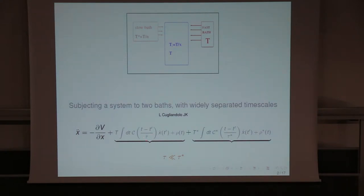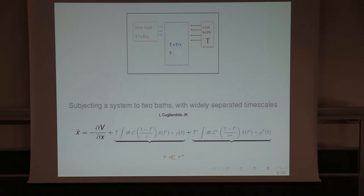One bath has a timescale that is fast and another one a timescale that is very much slower — much smaller than, lower than this one. The system in contact with this bath does everything it has to do before moving on with the other one, and the scales are completely one inside the other. The prefix 'multi' means in this case two, but we can do it with more.